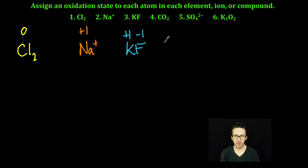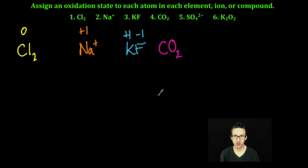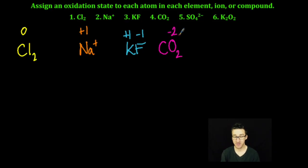Number four, things get a little scary — it's my first covalent compound: carbon dioxide. You're going to use that table of priority. We're going to assign an oxidation number to oxygen first; it's going to have an oxidation number of negative two.